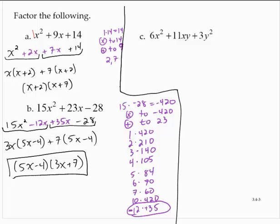Exercise C: 6x squared plus 11xy plus 3y squared. Notice that even though this has x's and y's, it follows the same basic form: x squared, then x to the first, then x to the 0, y to the 0, y to the first, and y to the second. So I can follow the same basic idea. 6 times 3 is 18.